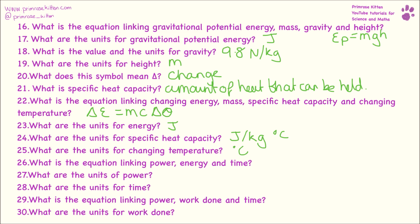What is the equation linking power, energy and time? Power equals energy divided by time. What are the units for power? Units for power are watts. Units for time are seconds — note that in the exam they might try to test you by giving time in minutes, hours or even days, so be careful to convert. What is the equation linking power, work done and time? Power equals work done over time. What are the units for work done? Work done is measured in joules.